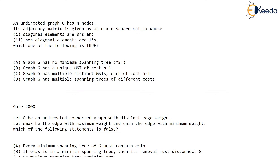This question I have picked up from one of the text books. There is an undirected graph G with n nodes, and its adjacency matrix is given by an n cross n square matrix. The graph is always represented by its adjacency matrix — a square matrix whose diagonal elements are zero and non-diagonal elements are ones.